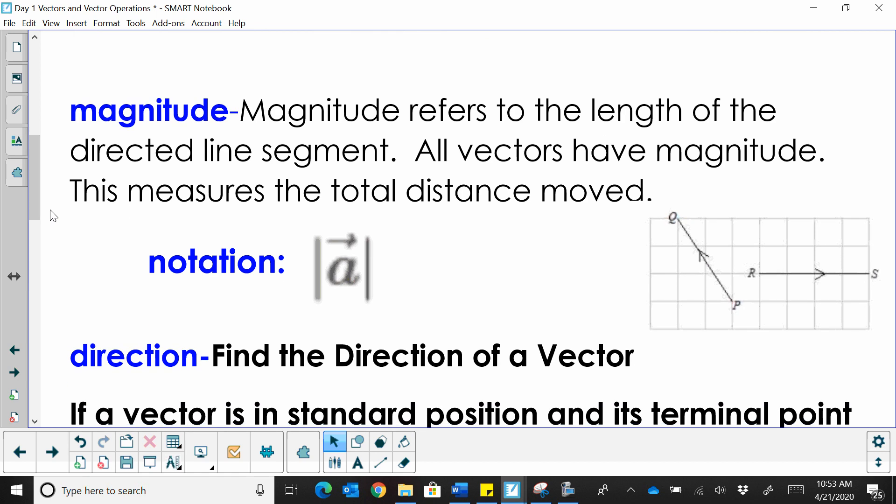A magnitude refers to the length of that directed line segment. So we'll talk a lot about magnitude being a length. All vectors have some length or some magnitude. And this measures the total distance moved. So if we go back to the airline pilot example, Atlanta to Houston, that is distance, a straight distance. So the distance from Atlanta to Houston would be our magnitude.